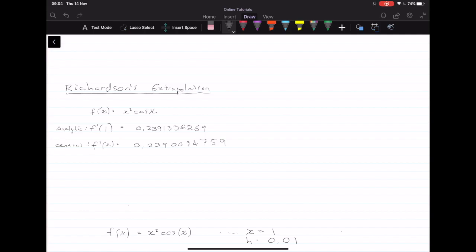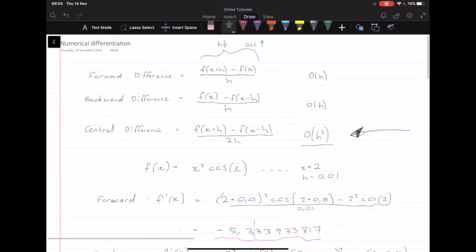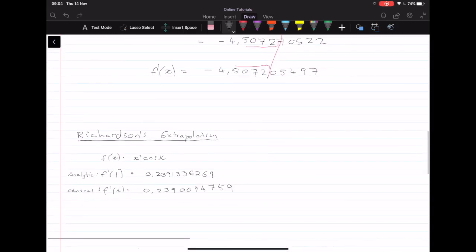So it gives us a higher order of accuracy. Last time we went over forward, backward and central difference, which gave us order of h² as our maximum. So Richardson's gives us order h⁴.